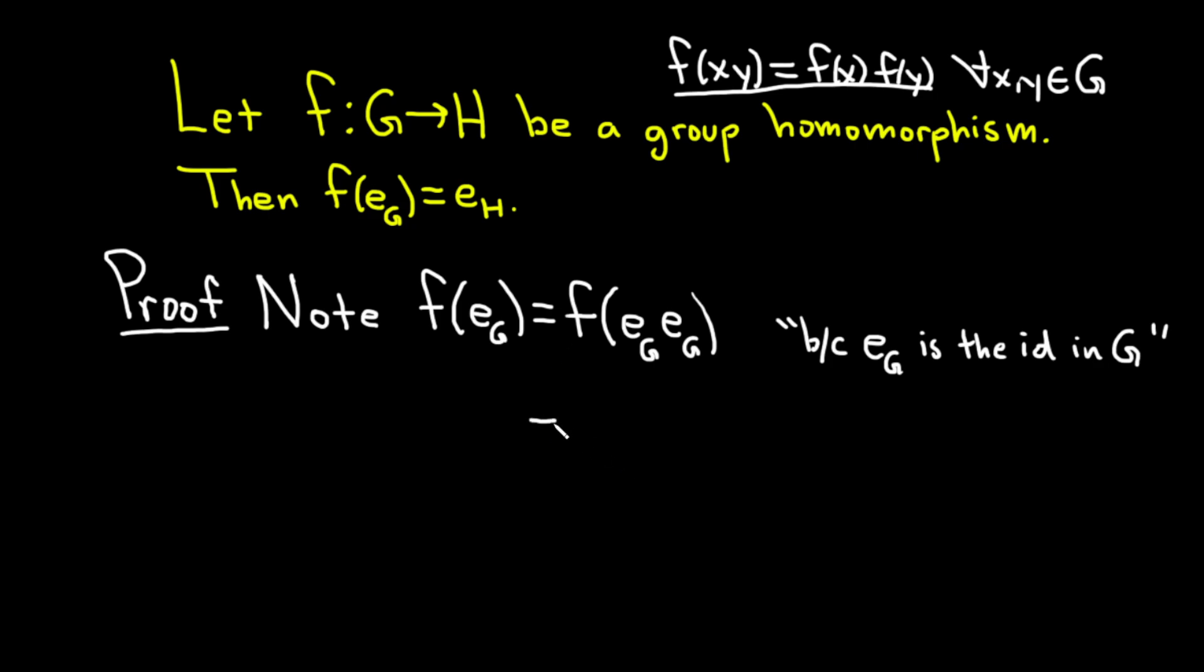And then this is equal to f(e_G) times f(e_G). And this equation is true because f is a group homomorphism. Homomorphism, what a fun word. And so now we basically have f(e_G) equal to this.